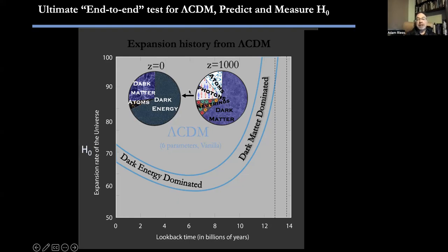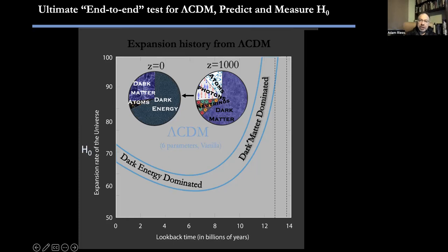Over time, as matter dilutes — atoms, photons, and neutrinos dilute — dark energy doesn't dilute very much, and the universe becomes dominated by dark energy. This model predicts an expansion history that features a dark matter-dominated era with decelerating expansion, followed by the dark energy-dominated era we live in now, where expansion is accelerating.